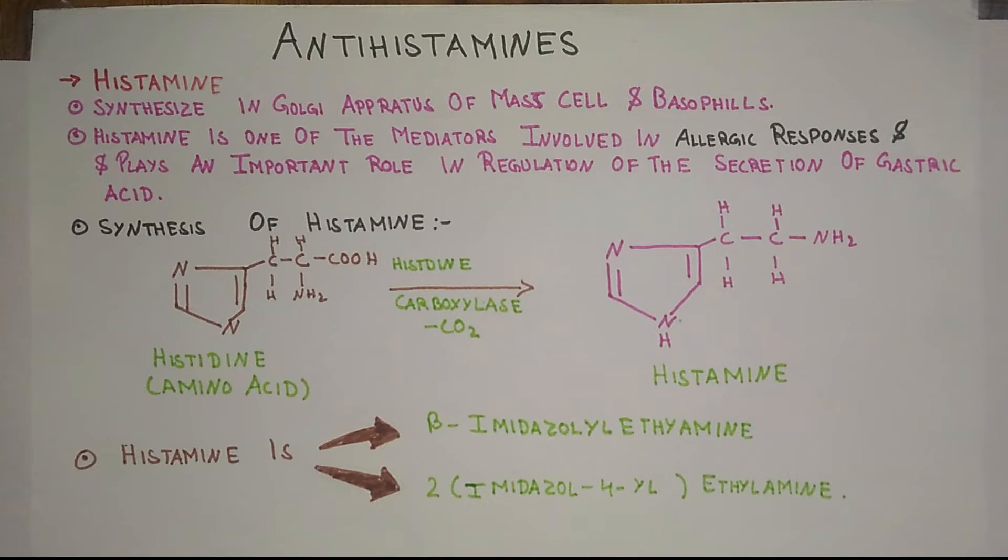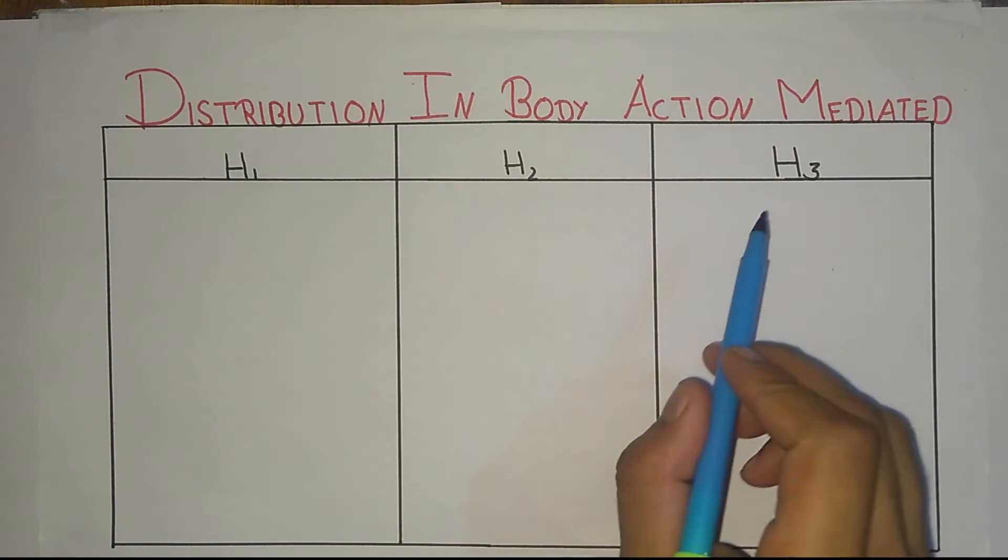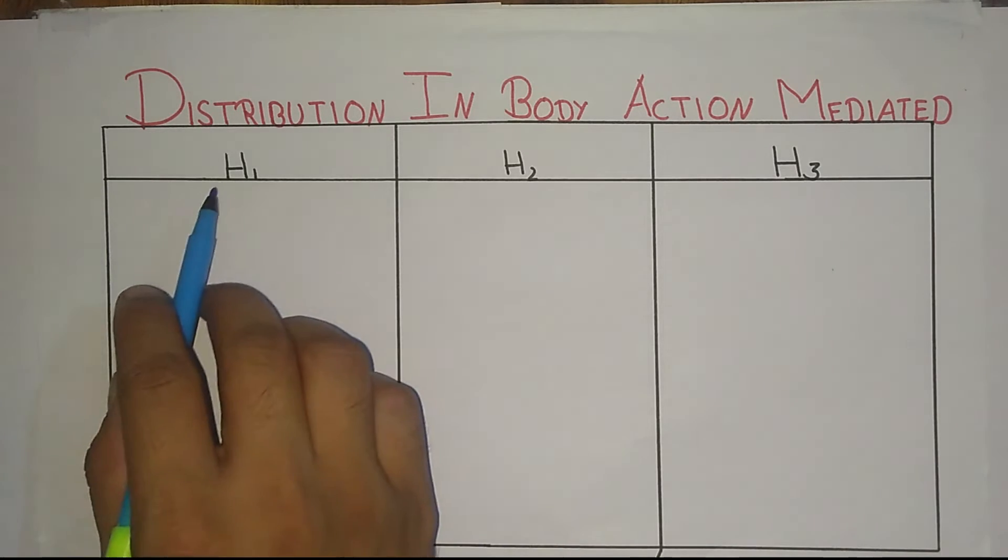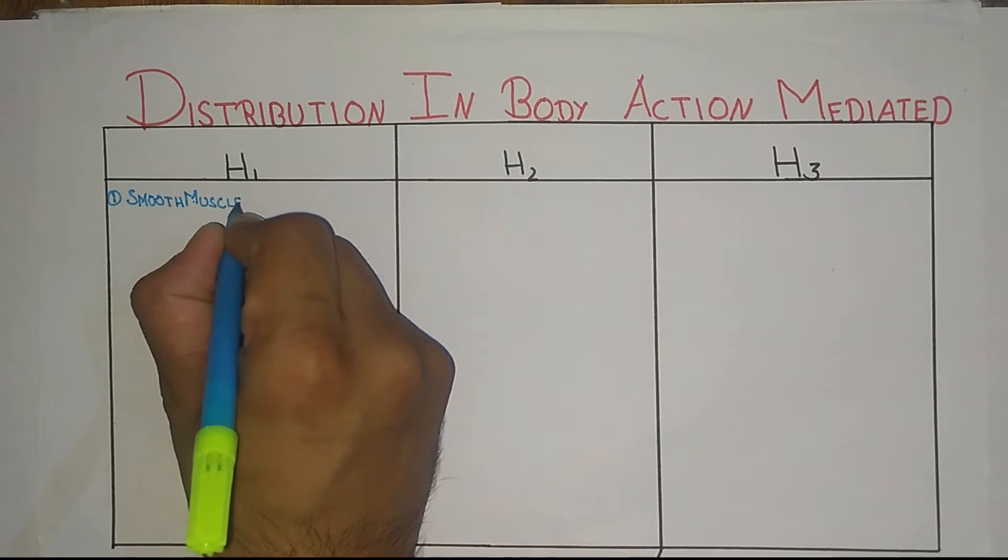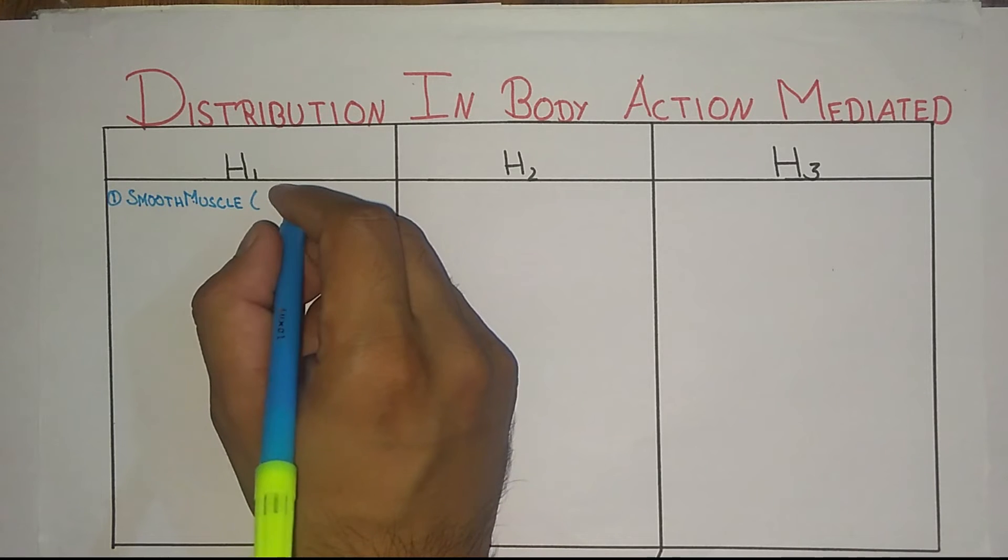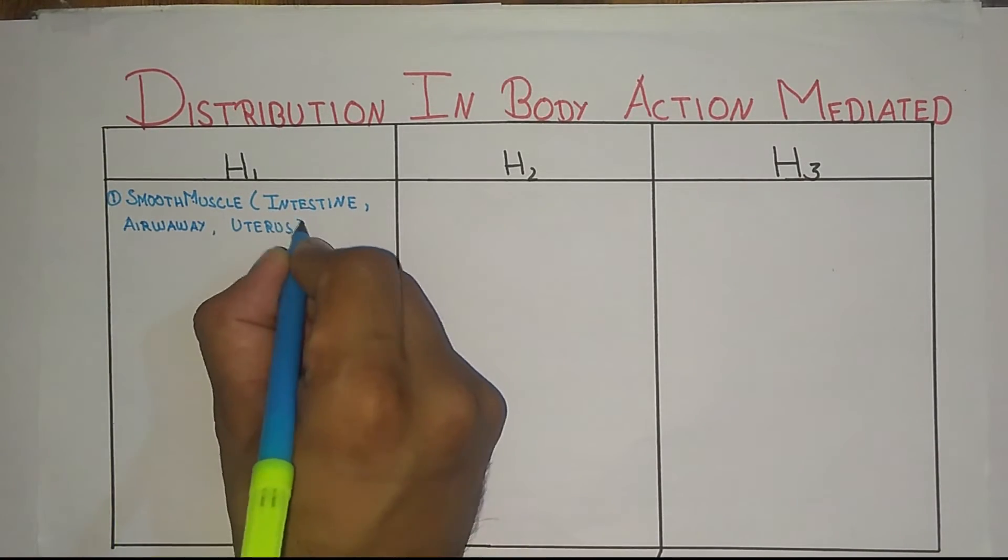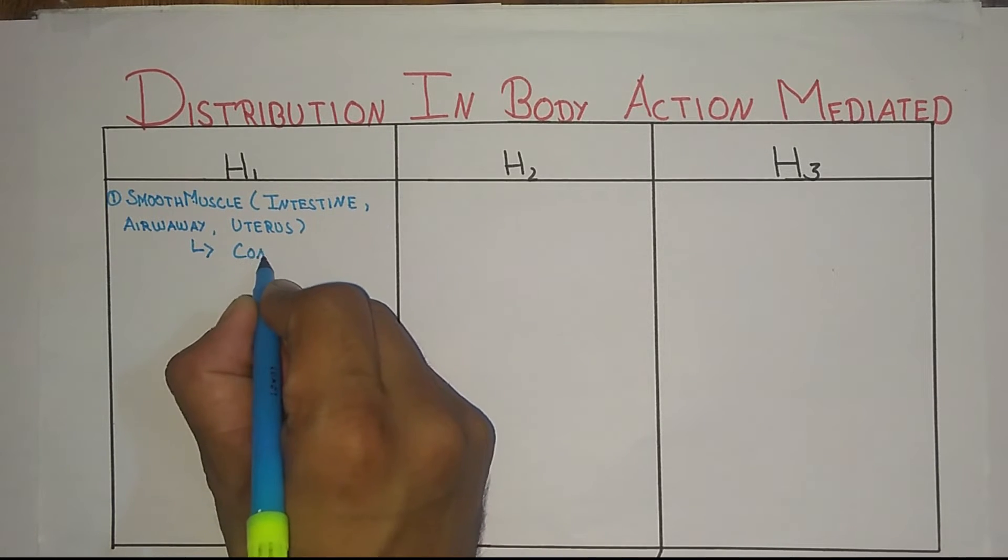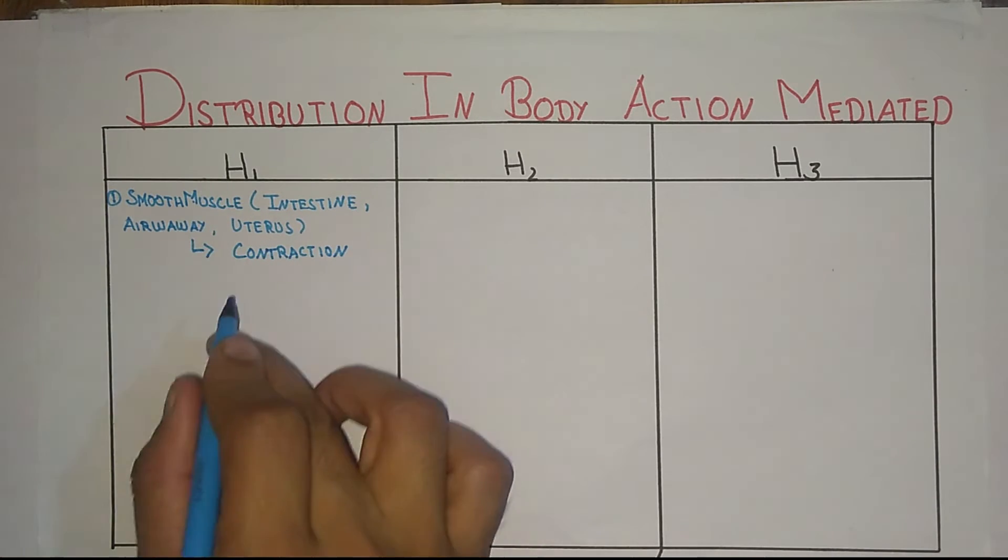These are some information about histamine. Now we will discuss the distribution of the receptors - H1, H2, H3 - where these receptors are present in our body, and what are the actions mediated. First is H1. H1 is present in smooth muscles, in your intestine, airway, and uterus. What do they do? They do the contraction.